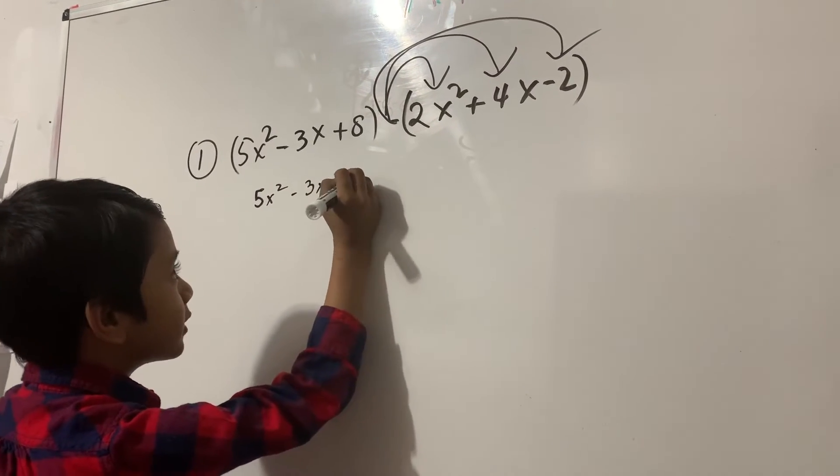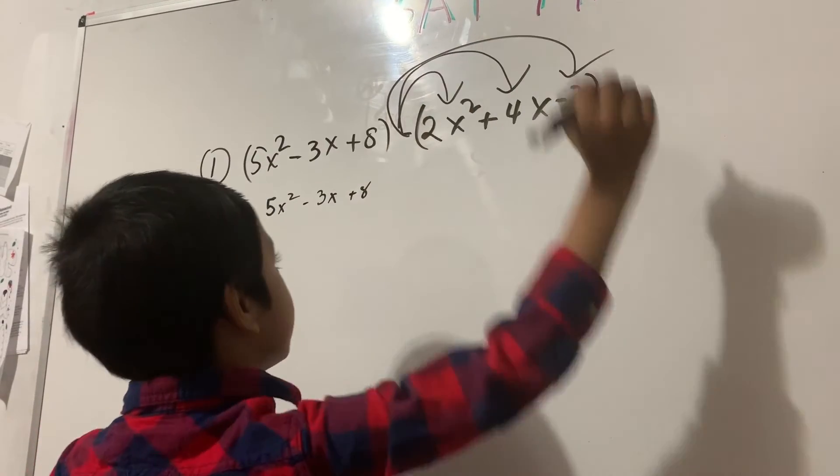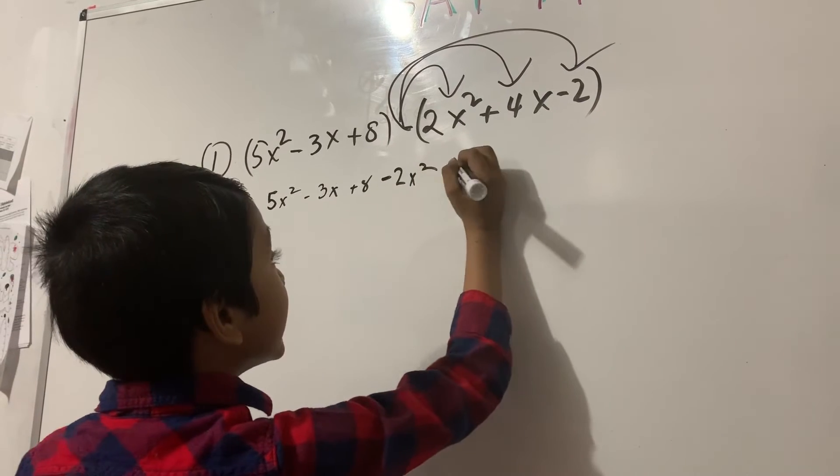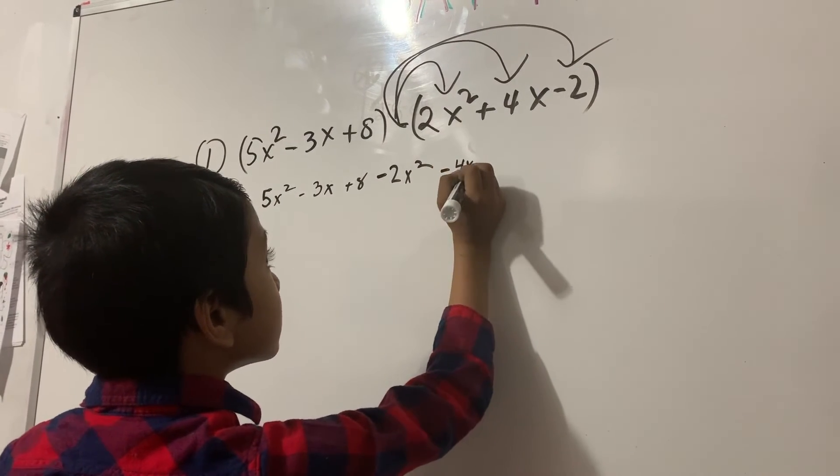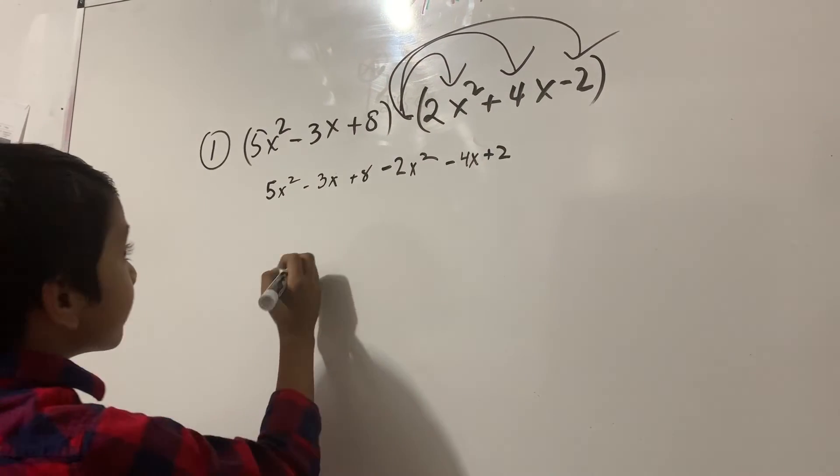5x squared minus 3x plus 8. This minus gets distributed minus 2x squared minus 4x plus 2.